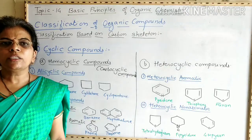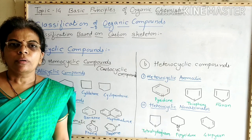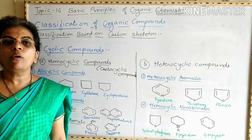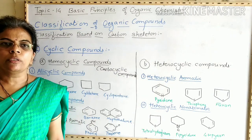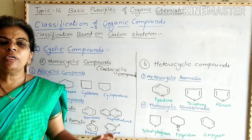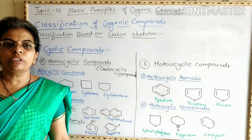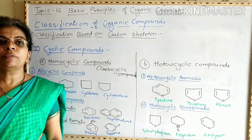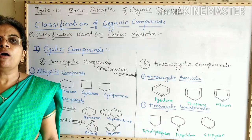The second class of organic compounds is cyclic compounds, also called closed chain compounds or ring compounds. In open chain compounds, the two terminal carbon atoms are free and not attached to each other. But when these two terminal carbon atoms get attached to each other, they form a cyclic or ring structure.